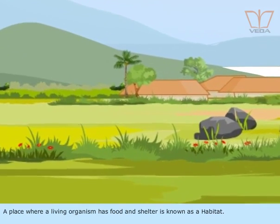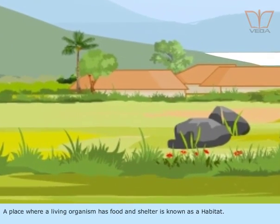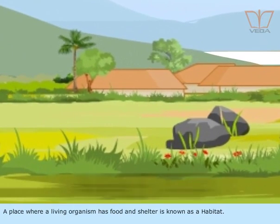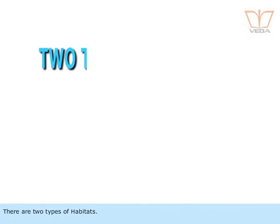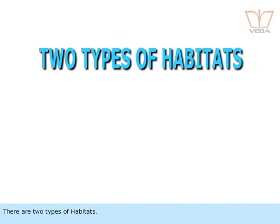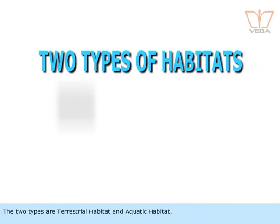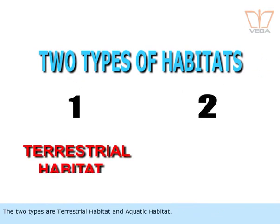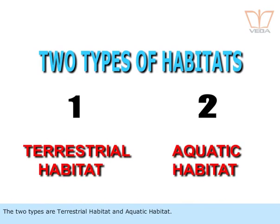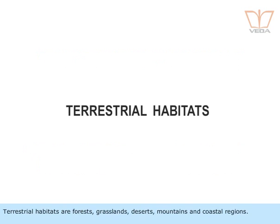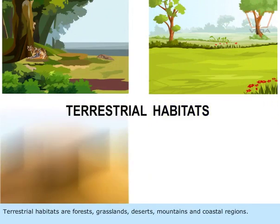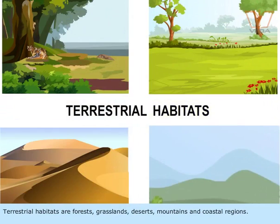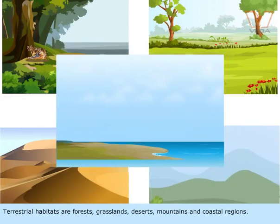A place where a living organism has food and shelter is known as a habitat. There are two types of habitats: terrestrial habitat and aquatic habitat. Terrestrial habitats are forests, grasslands, deserts, mountains, and coastal regions.